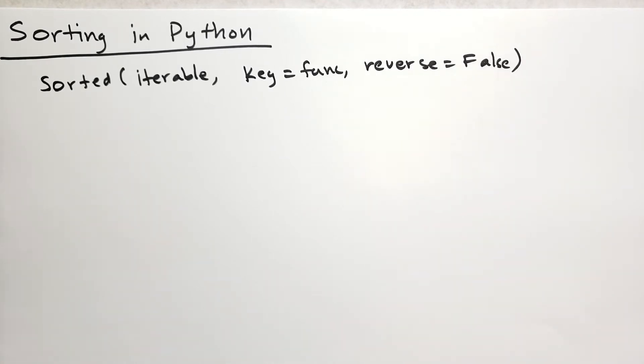Sorted is a built-in function. It can sort any kind of iterable and it always returns a list. By default, sorted will order items in the iterable from smallest to greatest values.